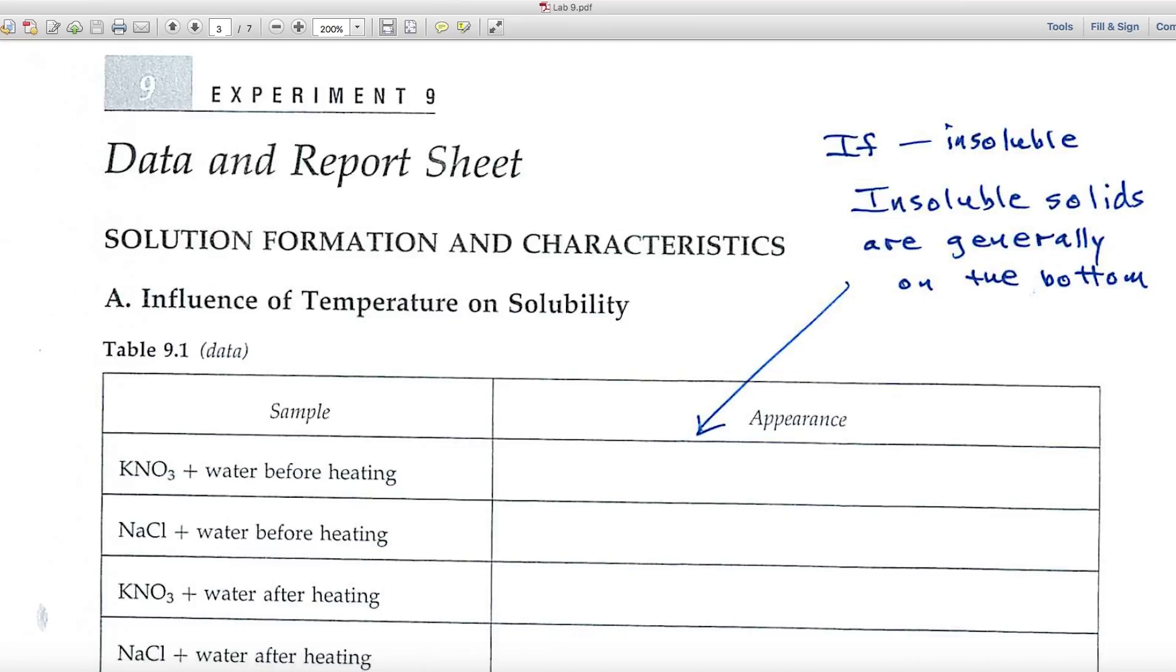Let's look at the data and report page. In this experiment, you'll be judging whether or not solids and liquids form solutions. If it's a solid and forms a solution, or a liquid for that matter, everything appears to disappear. You see a uniform solution. But if something is insoluble, if it's a solid, chances are it's on the bottom of the test tube. If it's a liquid that's insoluble, you'll see two layers.